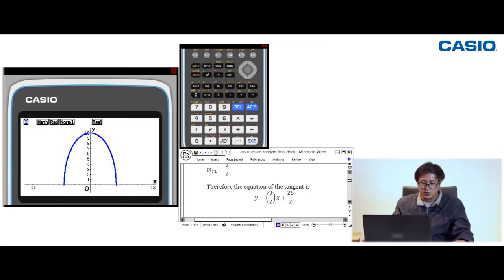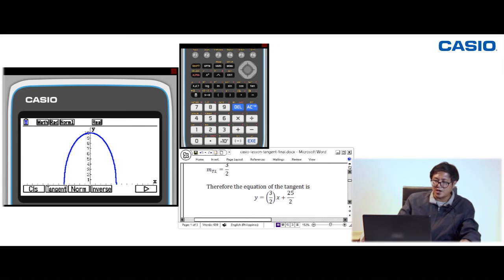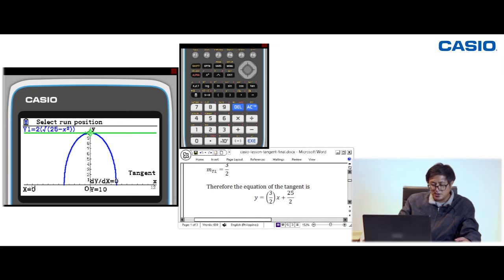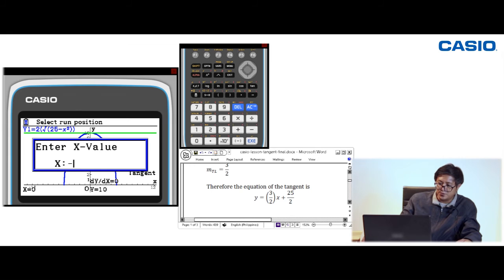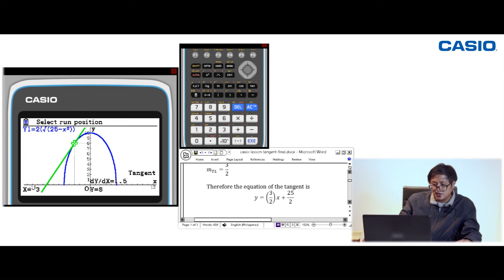Only Y1 is highlighted, meaning only the graph of Y1 will be shown when we press Draw. There's only the blue curve. Let's trace—Shift and Sketch. Press Sketch (F4). These are more options to get the characteristics of a curve. We have tangent, normal, inverse. The problem is about the tangent line. Press Tangent. The green line is the tangent at point (0, 10). Let's look for (-3, 8). This green line is the tangent to the blue curve at the point (-3, 8).